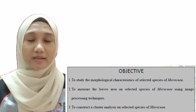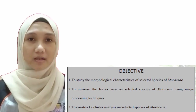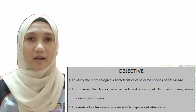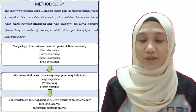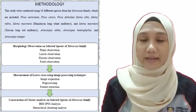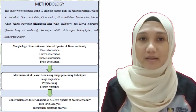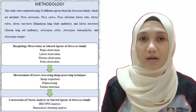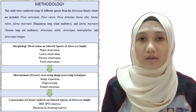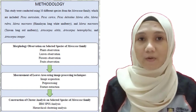The taxonomic characteristics of the selected species were analyzed to determine how these species are related to each other. In this study, 10 different species from the Moraisae family were used: Ficus auriculata, Ficus scarica, Ficus deltoida, Morus alba, Morus rubra, Morus macrura Himalaya, Morus macrura Taiwan, Artocarpus altilis, Artocarpus heterophilus and Artocarpus integer.